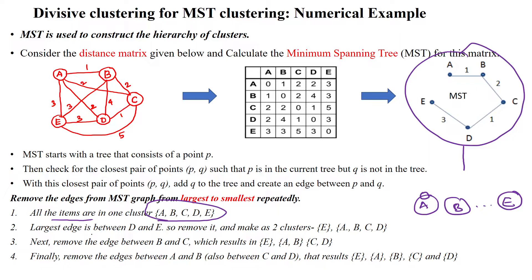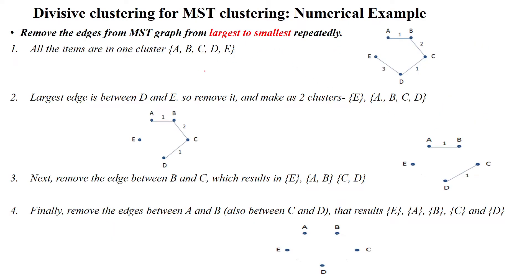With all data points in a single cluster, we select the largest distance edge in the MST. The largest distance is 3. We remove that edge from the MST, which causes E to be separated. Now E is in one cluster and the remaining 4 data points are in another cluster.